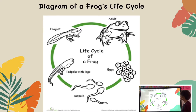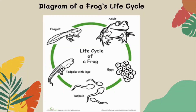Now we are going to look at a diagram of a frog's life cycle. It begins with eggs. Those eggs hatch into tadpoles. Those tadpoles grow legs and as they develop lungs, the tadpole changes into a froglet. The froglet will eventually lose its tail and change into an adult frog.